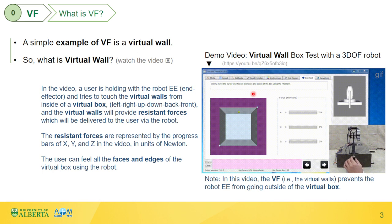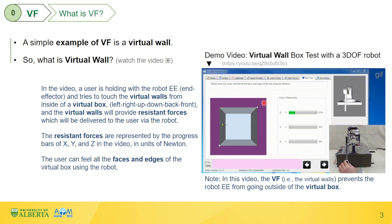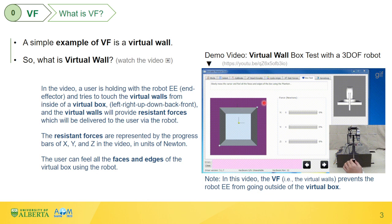The virtual walls will provide resistant forces which will be delivered to the user via the robot. The resistant forces are represented by the progress bars of X, Y, and Z in the video, in units of Newton. The user can feel all the faces and edges of the virtual box using the robot. Note that the VF, i.e., the virtual walls, prevents the robot end effector from going outside of the virtual box. These virtual walls are simple planes, easy to be expressed by math equations, and therefore relatively easy to set up.